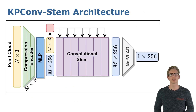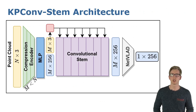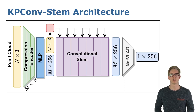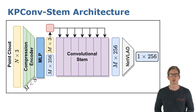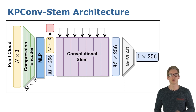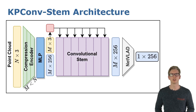For the backbone we use a KP-conv stem architecture that first extracts local features which then get accumulated into one global descriptor. The first part of the network is a pre-trained compression encoder which substantially reduces the number of points. By freezing this part of the network we can further reduce training time. In the following convolutional stem, we can bypass a lot of redundant computations like searching for nearest neighbors due to the stem architecture, which again reduces training time by another 50%.